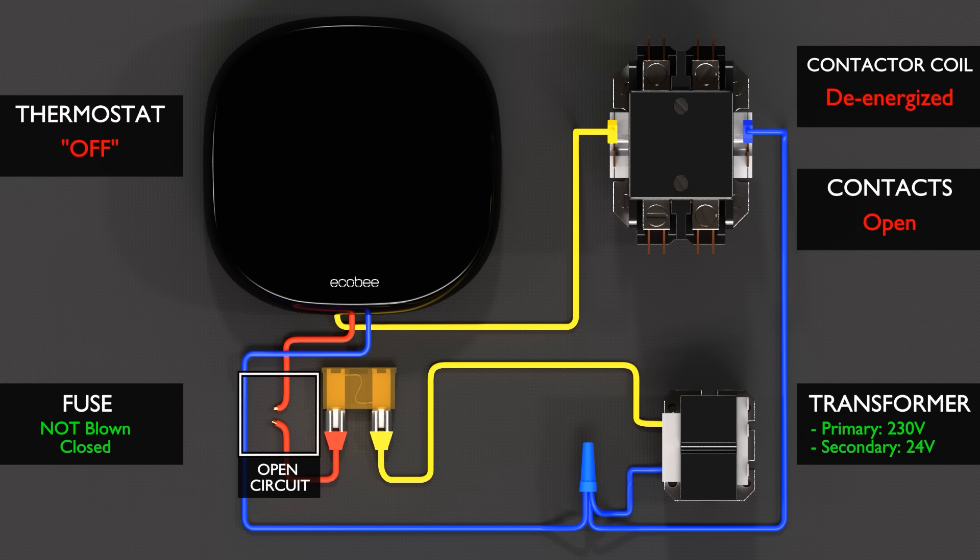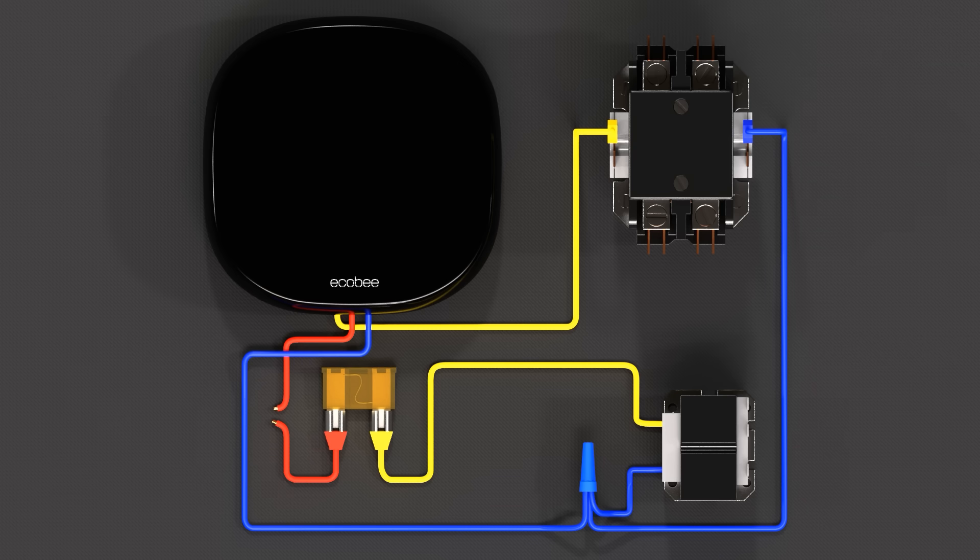When the R circuit is open, the thermostat is off. The fuse cannot be blown by an open circuit, but the contactor cannot energize, and the contacts remain open. Therefore, the system does not run. In this case, the open circuit is shown as a broken conductor or wire.